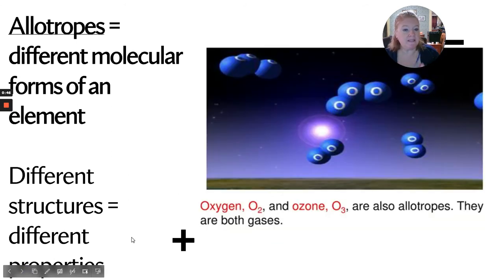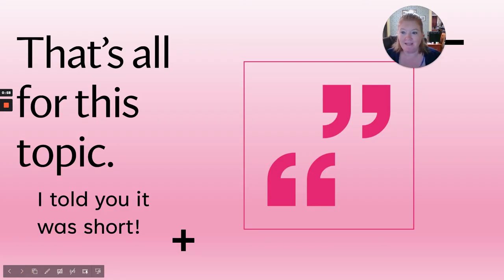Another example is oxygen gas, O2, and ozone, O3. Both are oxygen allotropes. They're both gases with widely different properties. That's it, topic one.